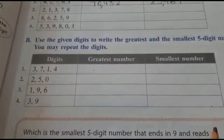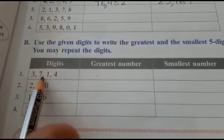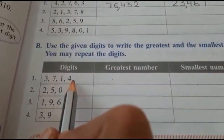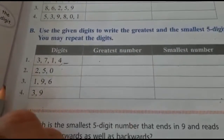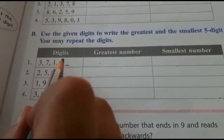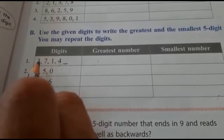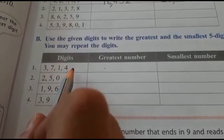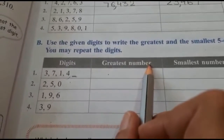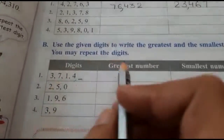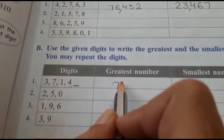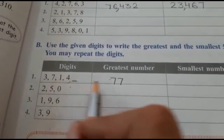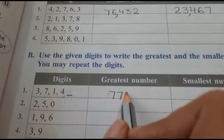Here are four digits but we want five digits, so how many digits are less? Only one digit. Put a blank here — you will come to know how many times we will repeat a digit. It means one blank is there, so one more digit is required to make it a five-digit number. When we write the greatest number, we always start with the greatest digit, and we repeat the greatest digit.